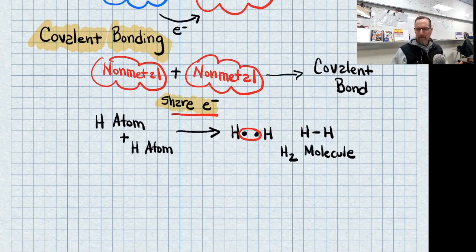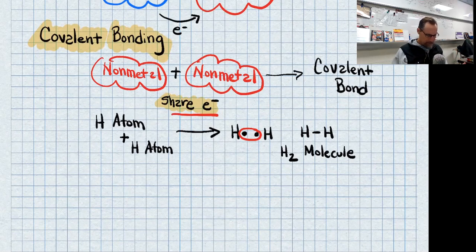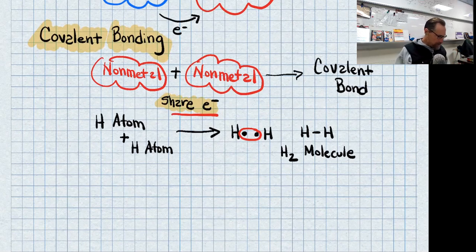Remember, a molecule can have two atoms, but a compound needs to have two different atoms of two different elements. So let's go ahead and do some examples of those.